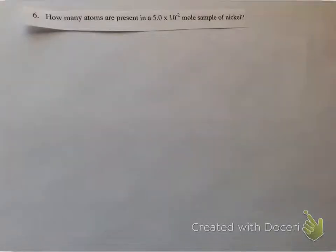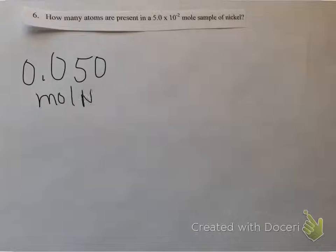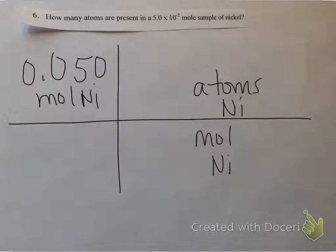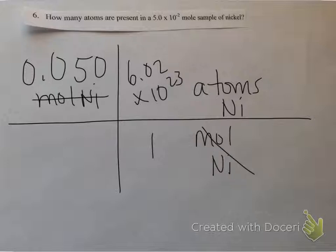For number 6, I'm asked to convert moles to atoms of nickel. So I have 0.050 moles of nickel. Down here we'll have moles of nickel, and the top is asking for atoms, which I'm allowed to put with moles. Next to moles I will always put 1, and next to atoms I will put 6.02 times 10 to the 23rd. Multiply the top and divide by the bottom, cross out units, and I get 3.0 times 10 to the 22nd atoms of nickel.